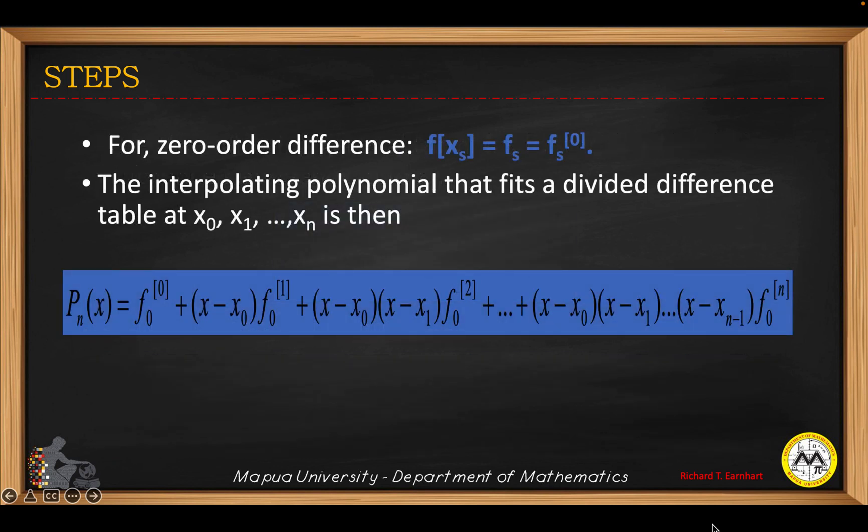For the zero order difference, f(x sub s) is just equal to x sub s — this is the first value of y. The zero order difference is actually given as the original y values.